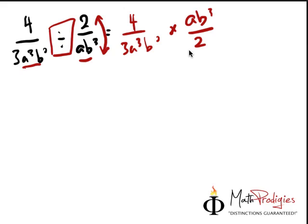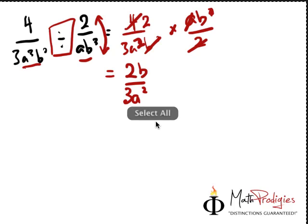And then from here, you can start cancelling. Cancel 2, cancel 2, you get 2 over here. You cancel b squared, and you still have a b over here. You cancel a over here, you have a squared. And so the answer you're left with is actually 2b over 3a squared. And that's the answer. Very simple. If you got it right, high five. You're a math prodigy. Good job.